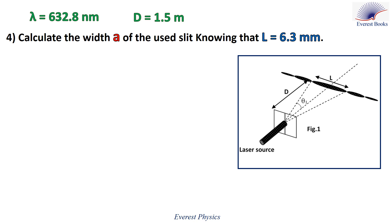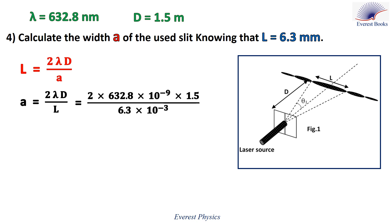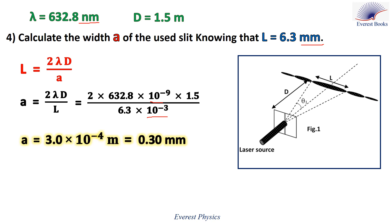Number four: calculate the width of the used slit, knowing that the length of the central bright fringe equals 6.3 millimeters. Using the relation L equals 2 lambda D over A, we get A equals 2 lambda D over L. Lambda must be converted from nanometers to meters (multiply by 10⁻⁹), and L from millimeters to meters (multiply by 10⁻³). This gives A equals 3.0 times 10⁻⁴ meters, or 0.30 millimeters.